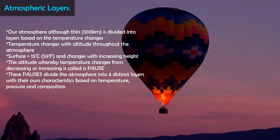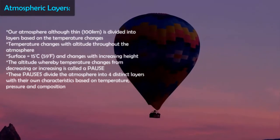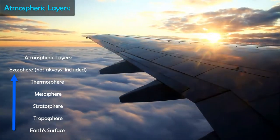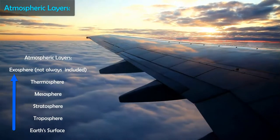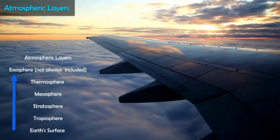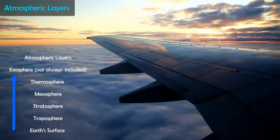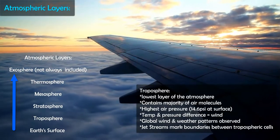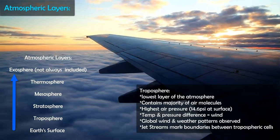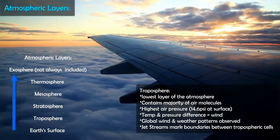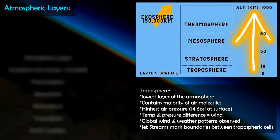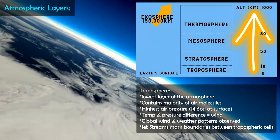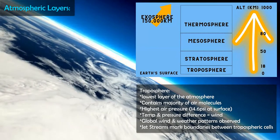The first layer is called the troposphere. This is what we experience every day — we breathe air from it and experience weather, wind, and climate. There is some weather and clouds that extend into the next layer, the stratosphere, but the majority occurs in the troposphere. It has the highest air pressure because gravity bunches the air molecules together near the surface. The troposphere extends from zero kilometers up to about 18 to 20 kilometers, depending on latitude.